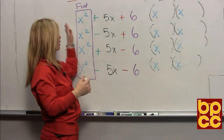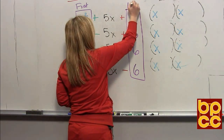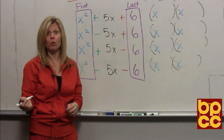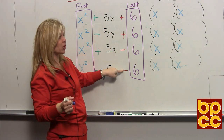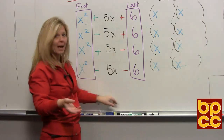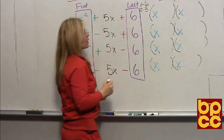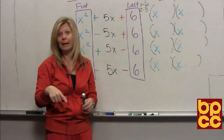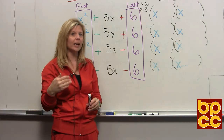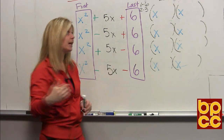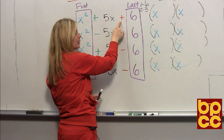After we figure out what makes the first term, we go to the last term. We want to figure out what multiplies to 6 — don't look at the symbols yet, just look at the number. We have some options: multiplying to 6 could be 1 times 6 or 2 times 3. You can't just pick which set of numbers you like better. The set of numbers you need has to multiply to 6, but they also have to add to the middle term.